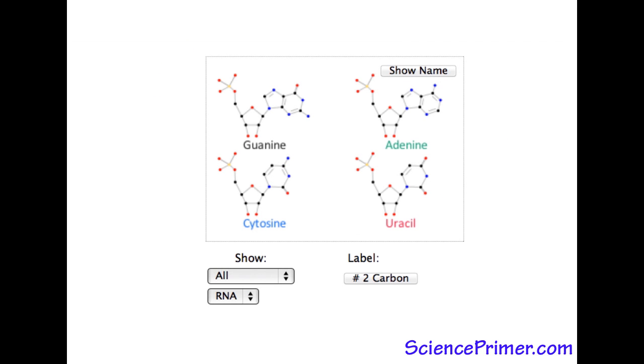The nitrogenous bases in RNA are guanine, adenine, cytosine, and uracil.